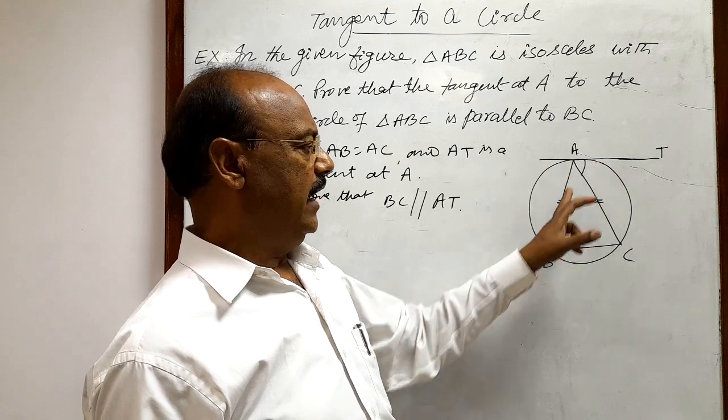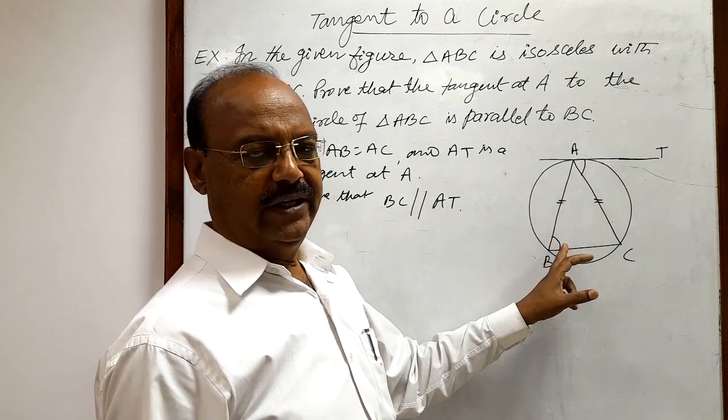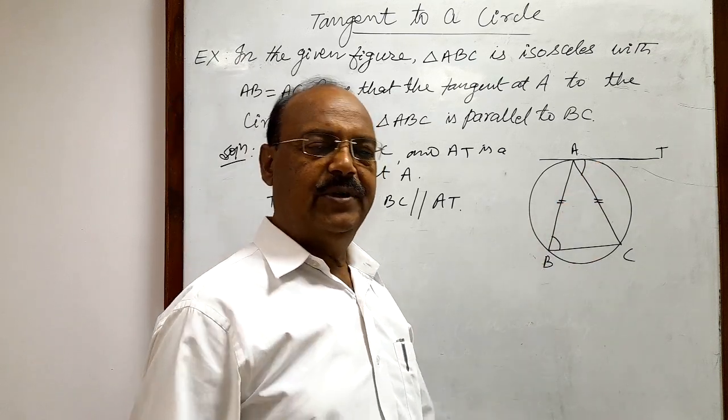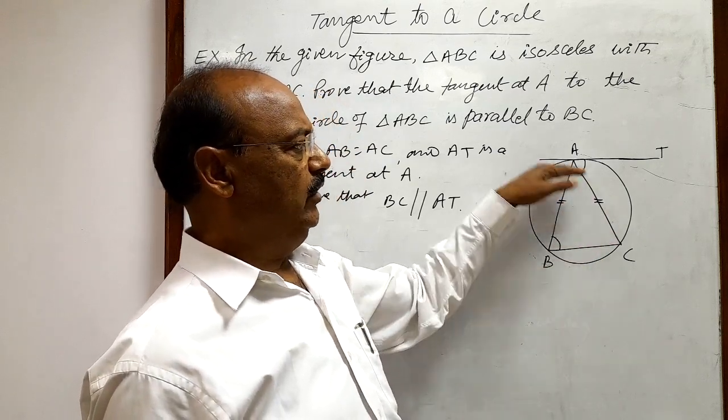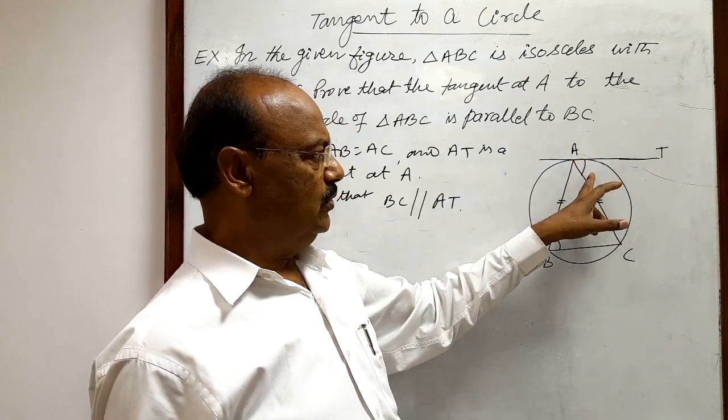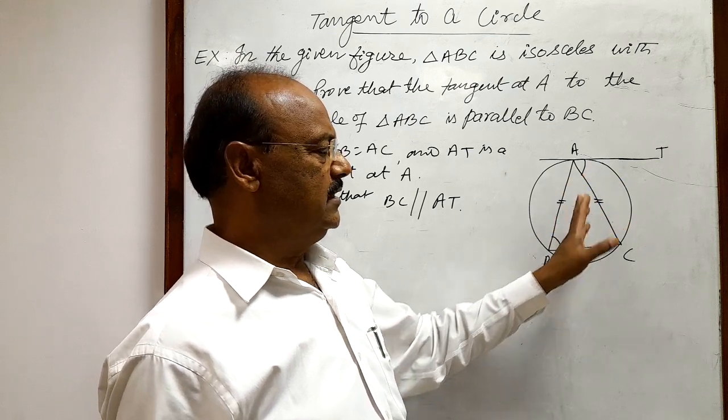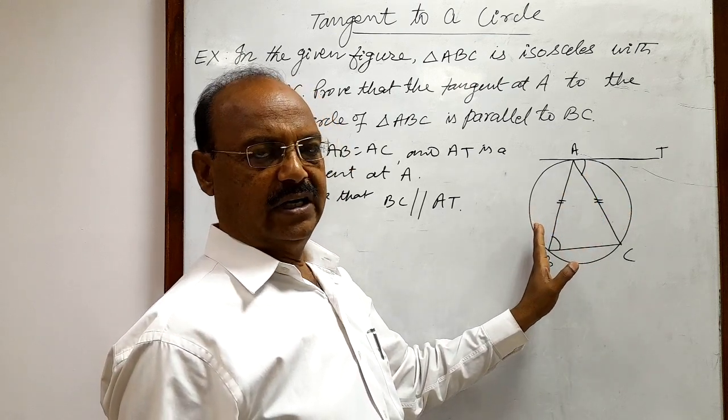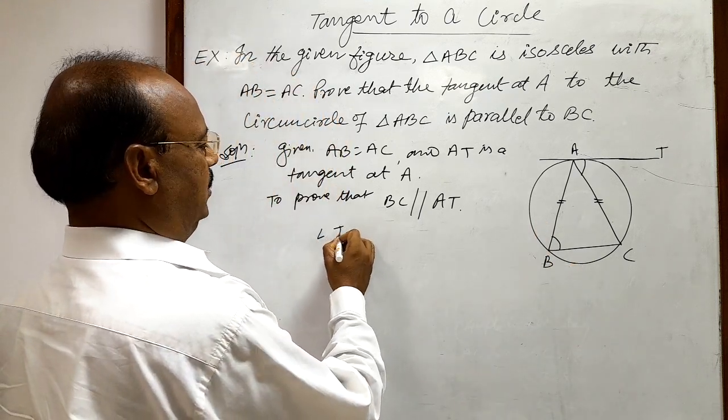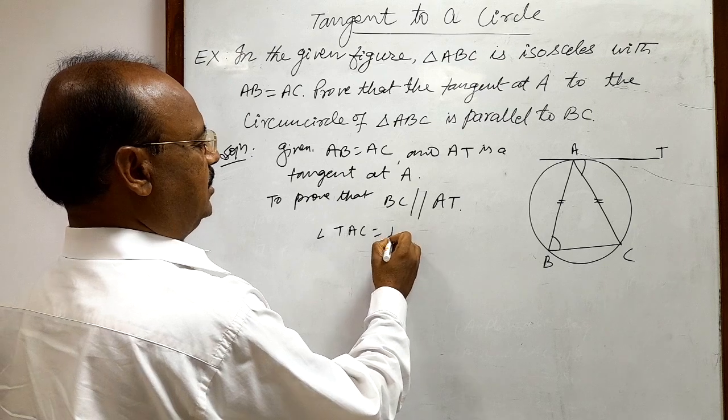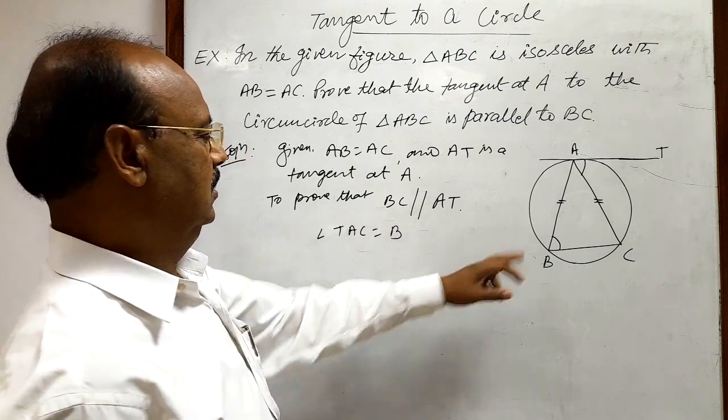Because these are the angles in the alternate segment. We have several times discussed the property that the angle subtended by a chord with the tangent is equal to the angle subtended by the same chord in the alternate segment of the circle. So we can write here, angle TAC is equal to angle B.